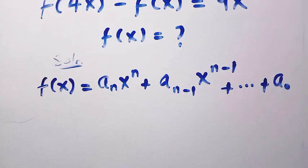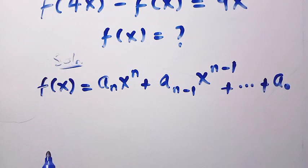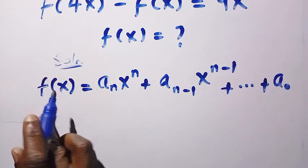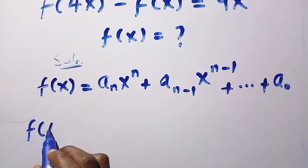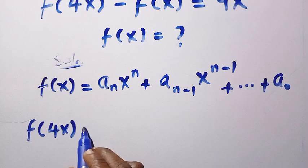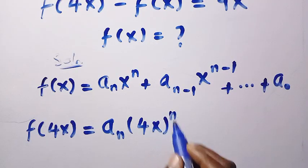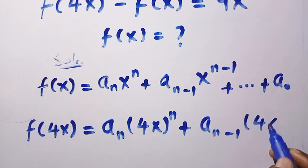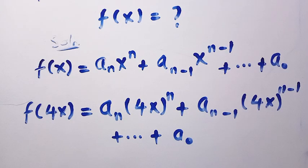We are now going to plug in the values we need. We have f(x) already, but we also need f(4x). So if x changes to 4x, it will reflect in all terms. Therefore, f(4x) equals aₙ times (4x) raised to the power of n, plus aₙ₋₁ times (4x) raised to the power of n minus 1, continuing till a₀.